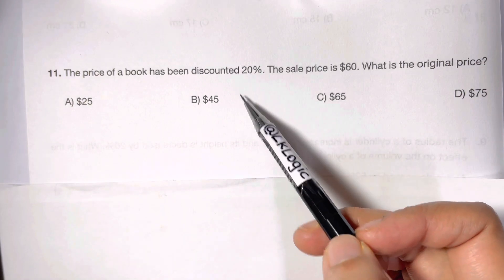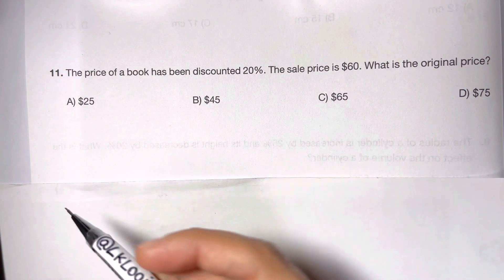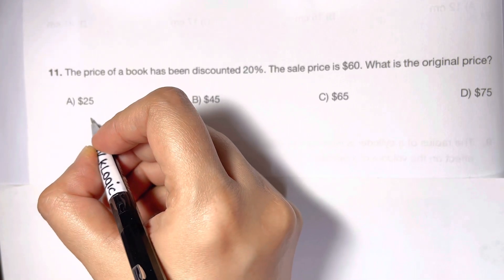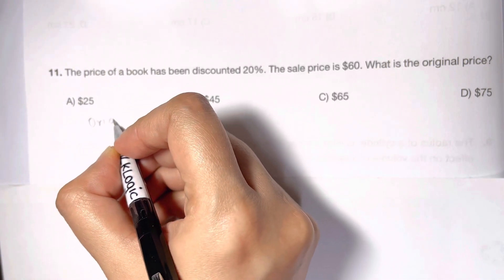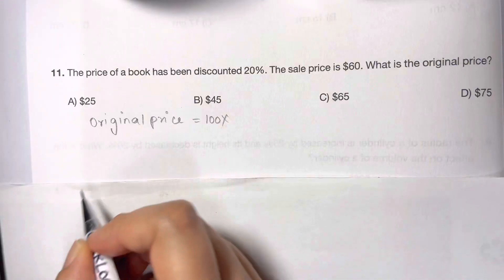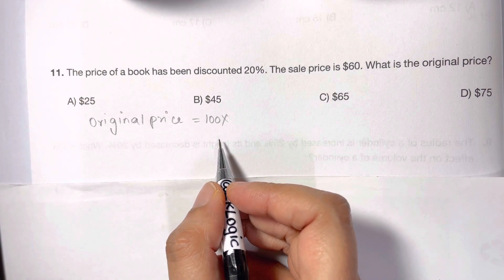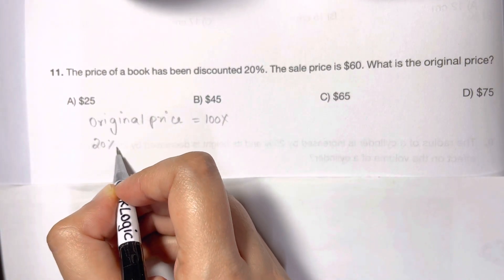It was discounted 20%, so what should we do? Let the original price be 100x.